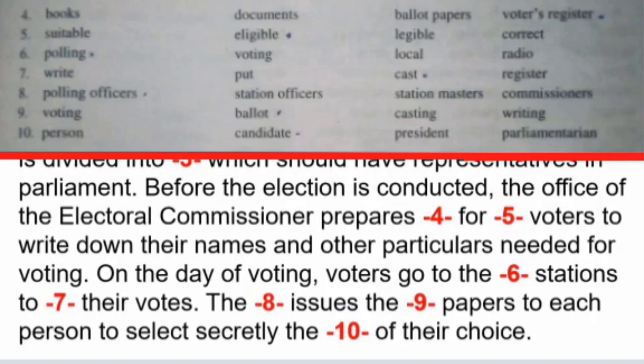For DASH voters — options: A. suitable voters, B. eligible voters, C. eligible voters, D. correct voters. The correct answer is B — for eligible voters — to write down their names and other particulars needed for voting.